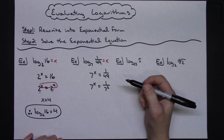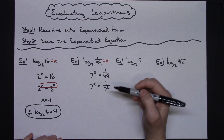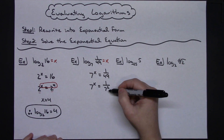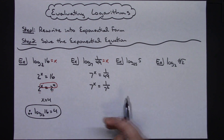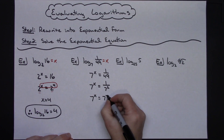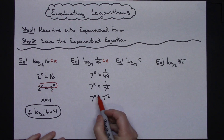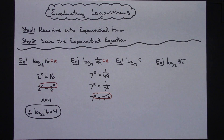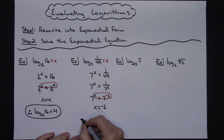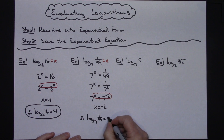Now I've got like bases, but the only problem is this is in the denominator and I need it in the numerator. This is where I implement laws of exponents: if I move a base and its exponent from the denominator to the numerator, I can make that exponent negative. So I can write 7 raised to the x equals 7 raised to the negative 2. Now I set exponents equal: x equals negative 2. Therefore, the log of 1 over 49 base 7 equals negative 2.